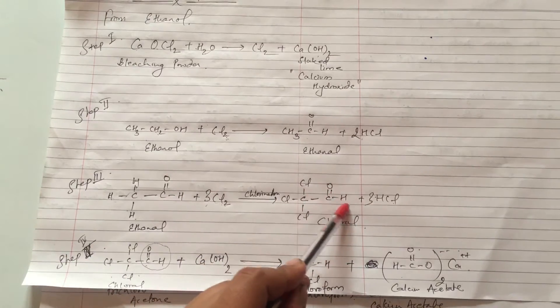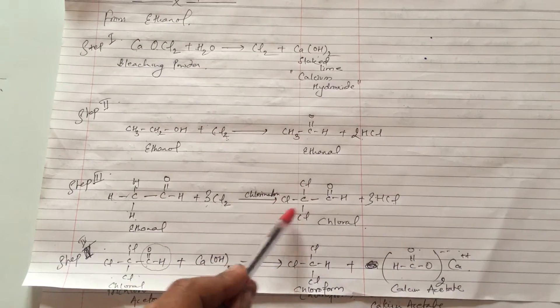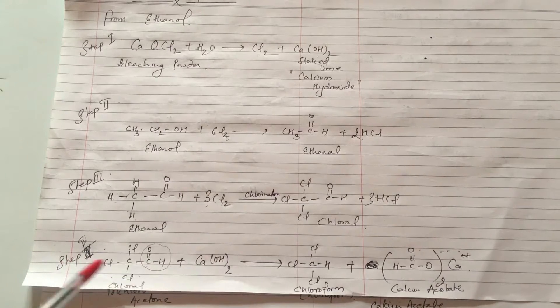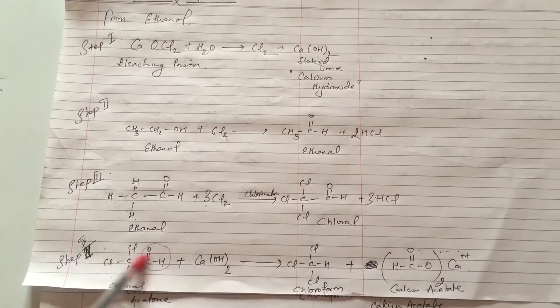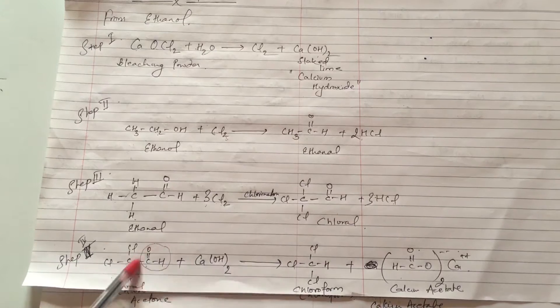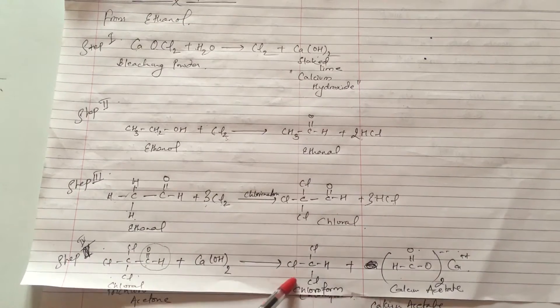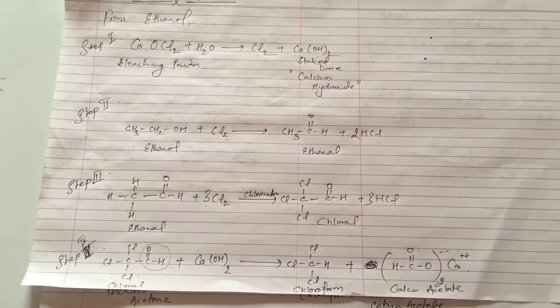Ultimately with calcium hydroxide, we treat what we would call the chloroform, only giving you the formation of calcium acetate which is also the salt of the acid. So in this way you can prepare chloroform from ethanol.